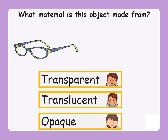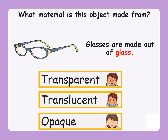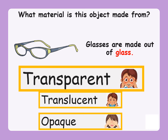Now, what material is this object made from? We have a pair of glasses. The glasses are actually made from two materials — the bit that you look through is made out of glass, and the bit that holds the glass in place is made out of plastic. But we are going to be focusing on the glass part of the glasses. So, glasses are made out of glass. Is the glass transparent — does it let light through? Is it translucent — does it let a little bit of light through? Or is it opaque — does it not let light through? If you said that glass is a transparent material, you are absolutely right.